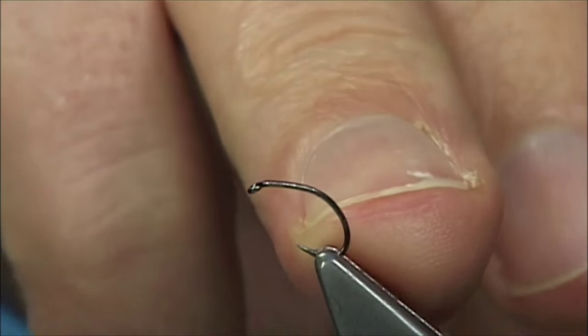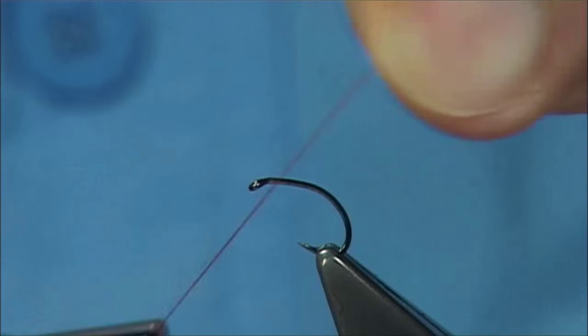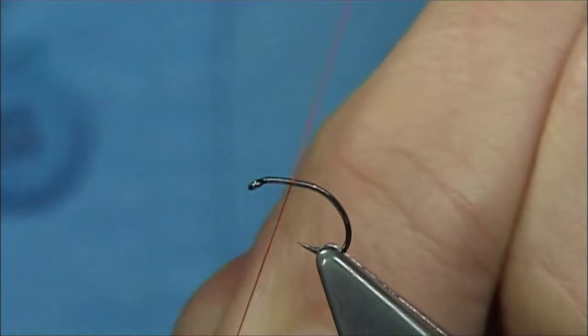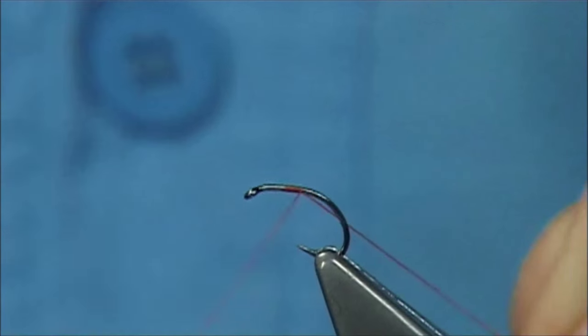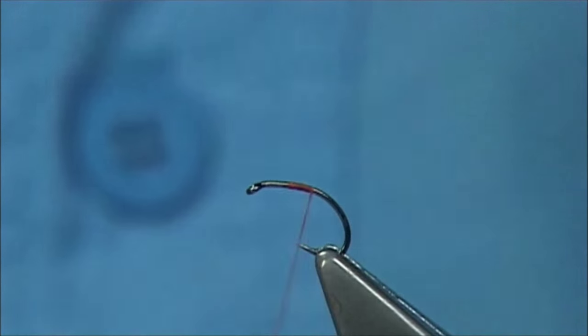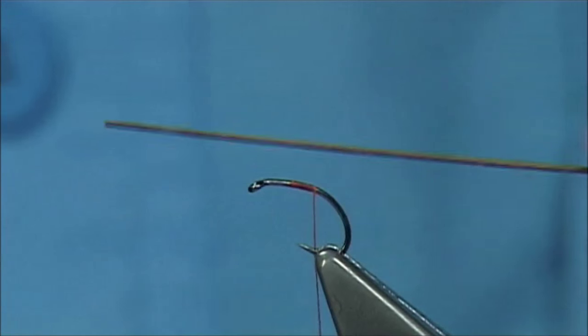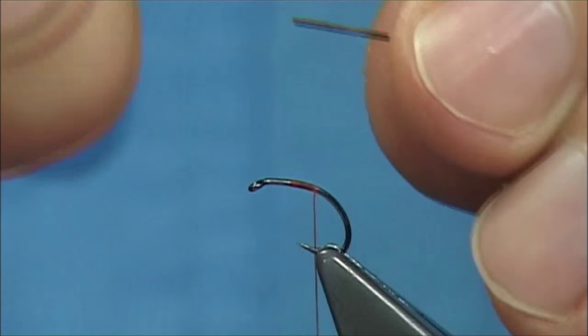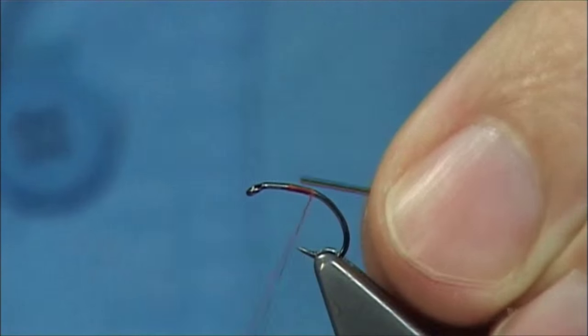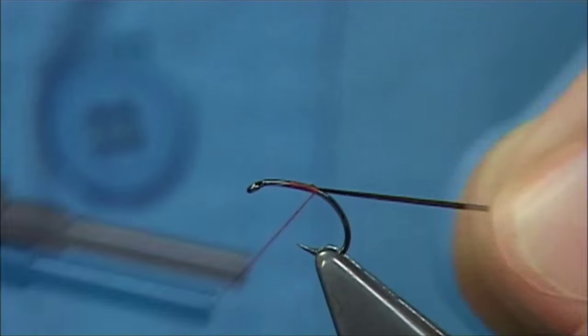What I've got to do is build up the abdomen at the back. I'm going to start at the center of the hook and work my thread down, and on the way down I'm going to tie in this stripped quill. This is just a peacock quill stripped and dyed brown which has made it a bit darker.